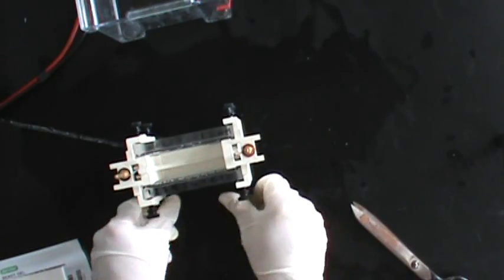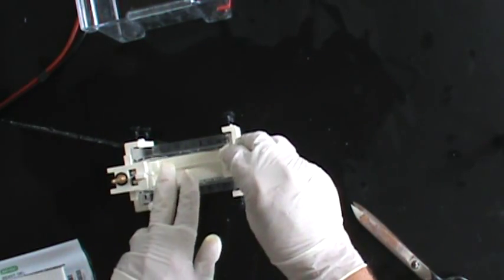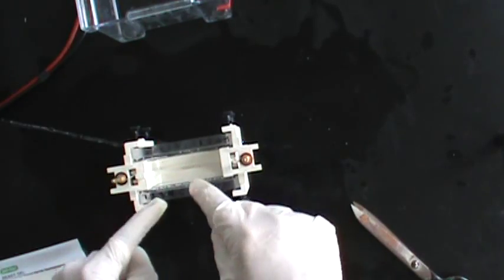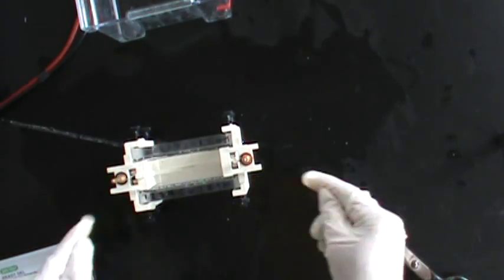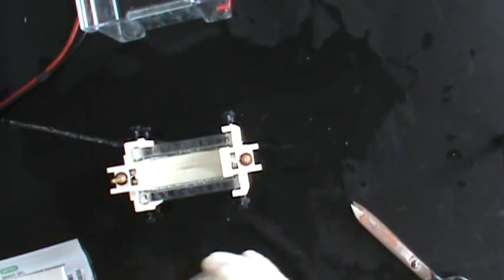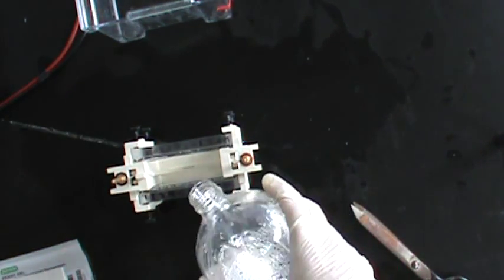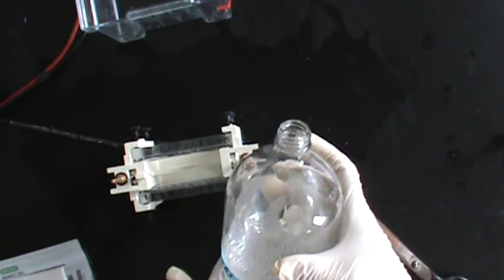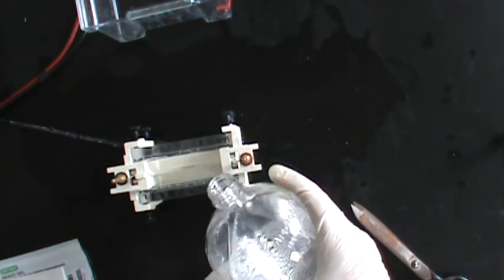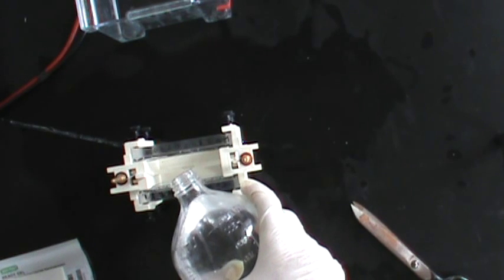Now, to make sure that this happens, we have to have a tight seal of this inner chamber so that all electrical current goes down through the gel rather than leaking out the sides. So, to test to make sure that we have a tight seal, we will take some of the running buffer, 1X SDS running buffer, and fill up the inner chamber.